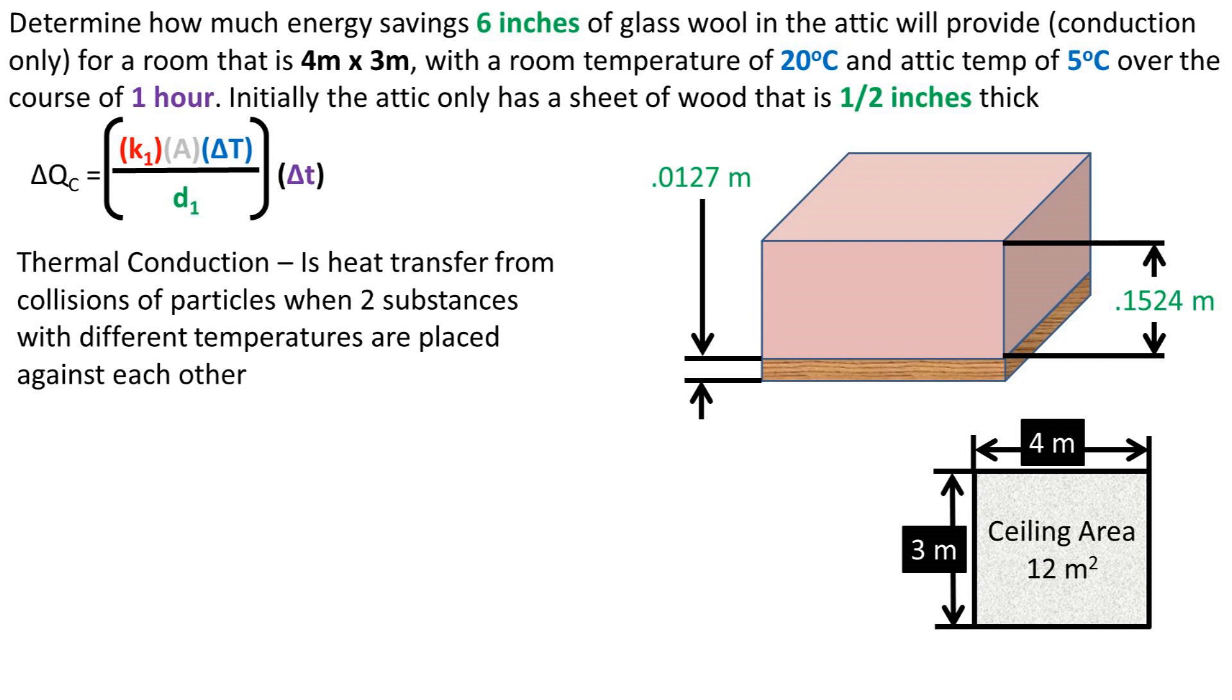To complete this problem, we'll be using the heat transfer from conduction formula, which is Q, or heat from conduction, equals K, or thermal conductivity, of a substance, which can be looked up using a table or internet search, times the area, times the change in temperature, designated with a capital T, over the thickness of the material, times the change in time, designated with a lowercase t.